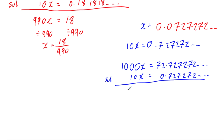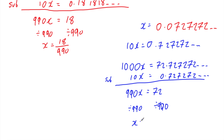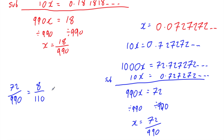We write the 10x beneath 1000x: 10x equals 0.727272... and subtract. 1000x minus 10x is 990x. The bits after the decimal point cancel out, leaving 72 minus 0 equals 72. So 990x equals 72. Dividing both sides by 990 gives x equals 72 over 990. Both numbers are divisible by 9: 72 divided by 9 is 8, 990 divided by 9 is 110. They're both even, so halving gives 4 over 55. So 0.0727272... equals 4/55.